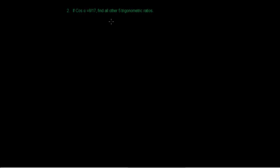Welcome friends, once again in another episode of trigonometric ratios. In this video we are going to learn about trigonometric ratios where we are given one ratio and have to find out the other five. The question says: if cos alpha equals 8 upon 17, find all other five trigonometric ratios.